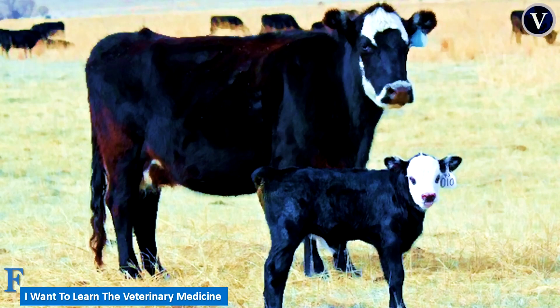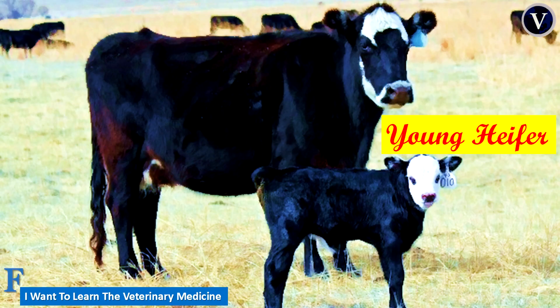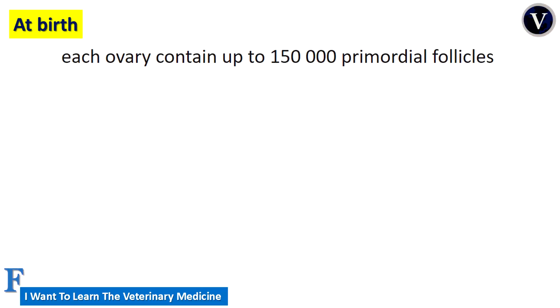We are going to begin with the young heifer calf. What are the changes that occur in the ovary of a young heifer calf at birth? When the young heifer is born, each ovary contains up to 150,000 primordial follicles. The ovaries then start to develop and produce growing follicles.